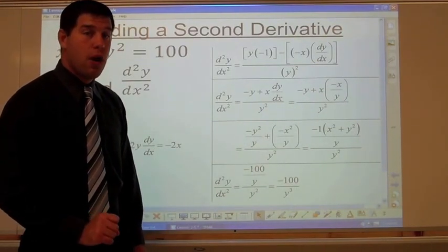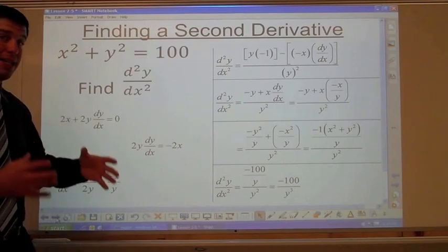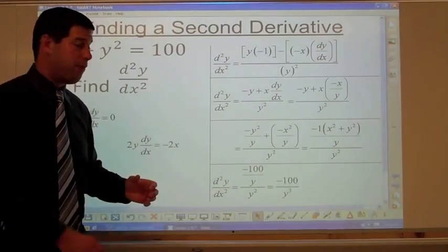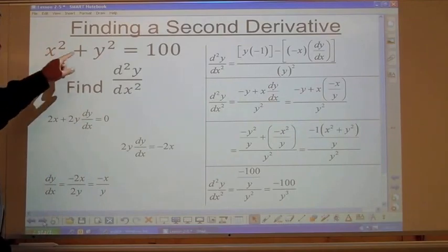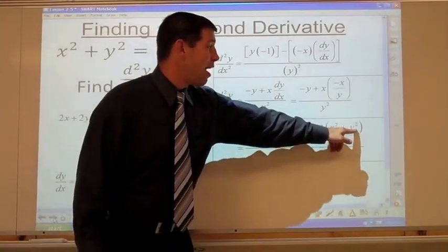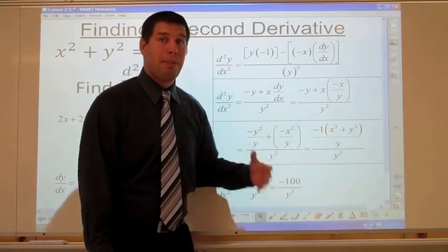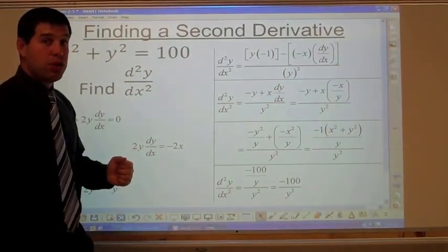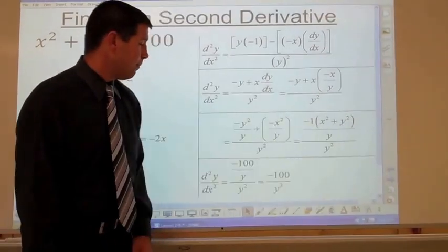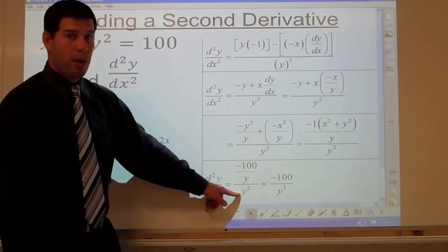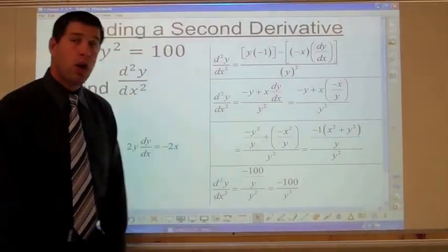Here's the creative step: we're still working with the original circle equation, where x squared plus y squared equals 100. So substitute 100 for x squared plus y squared: you get negative 100 over y, all over y squared. Dividing by y squared is the same as multiplying by 1 over y squared, giving negative 100 over y cubed.